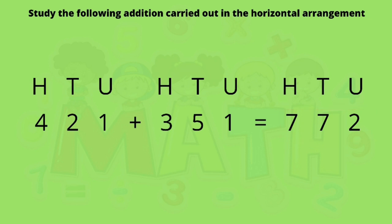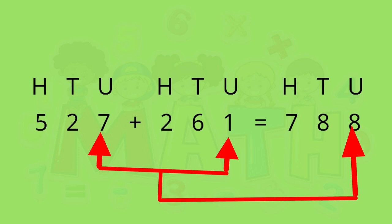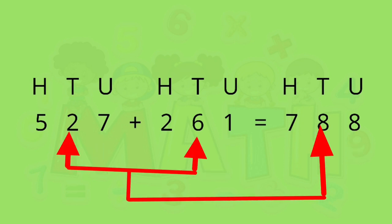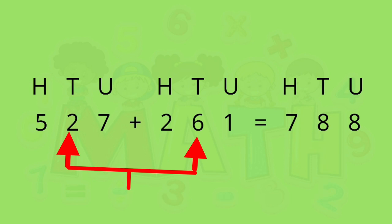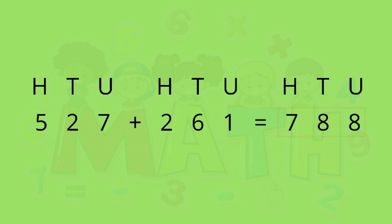In the same way we add numbers in horizontal form. Next sum: 527 plus 261. Seven units plus one unit is equal to eight units — write 8 here. Two tens plus six tens is equal to eight tens — write here. Five hundreds plus two hundreds is seven hundreds — write 7 here. So the answer is 788.